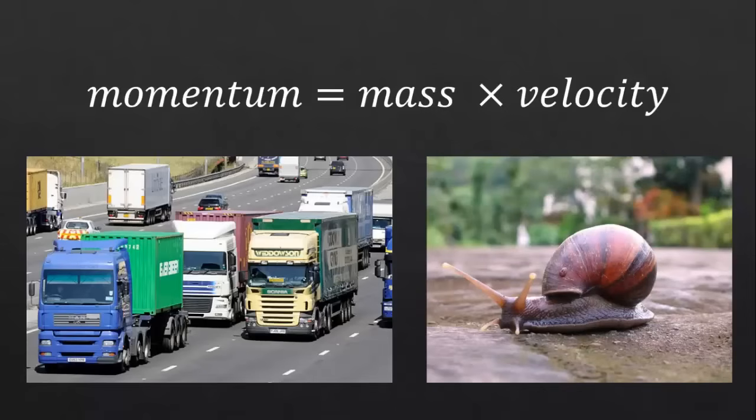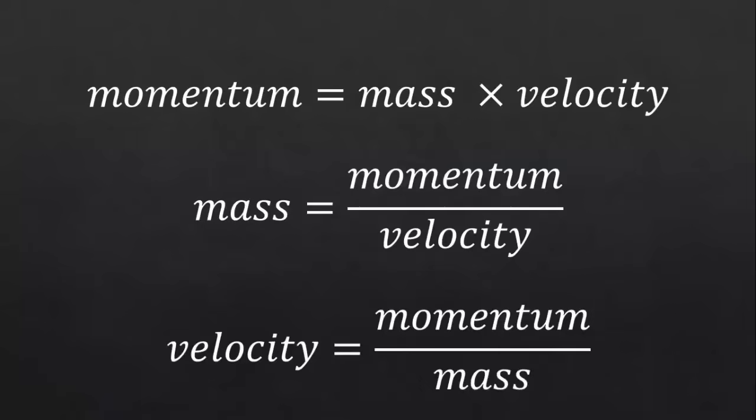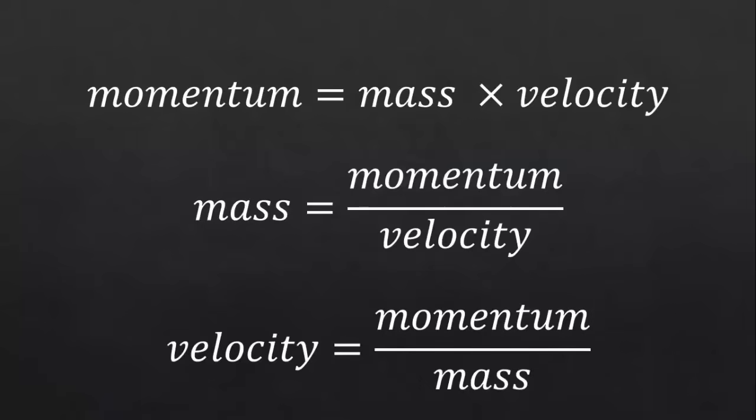The equation for momentum is momentum equals mass times velocity. You may need to rearrange this equation to calculate either mass or velocity if the two other factors are known.